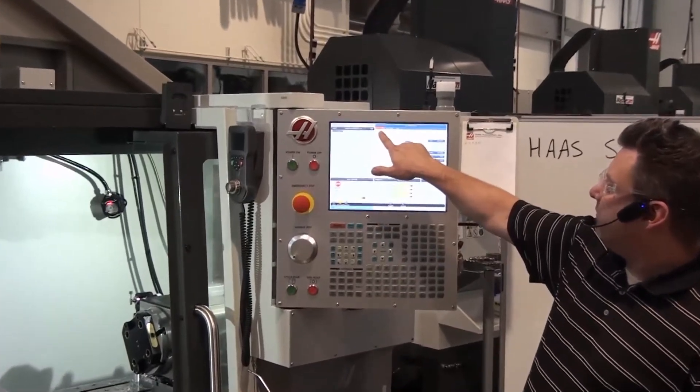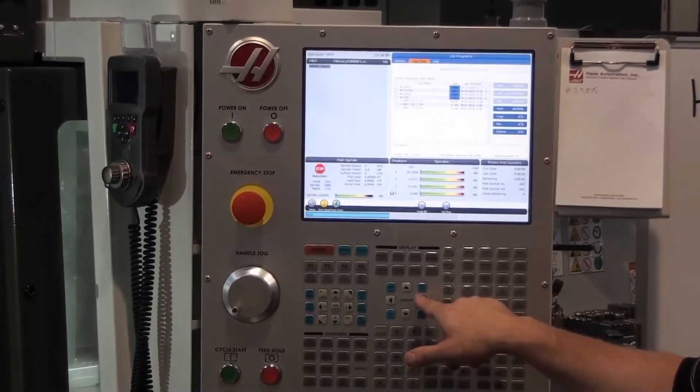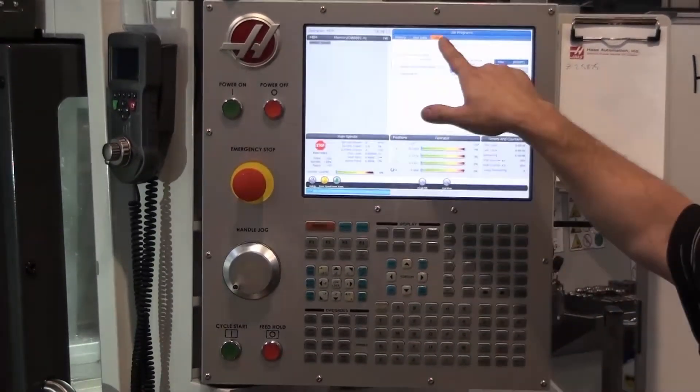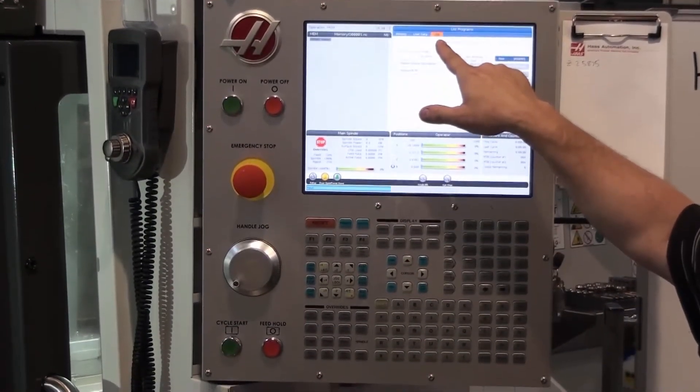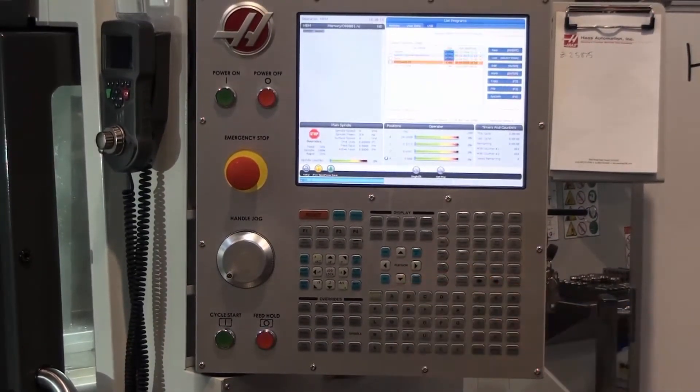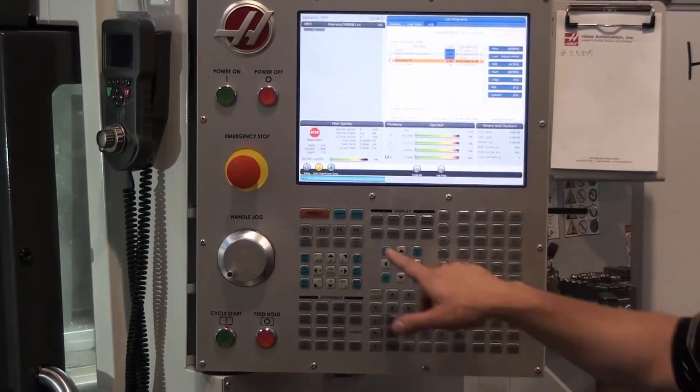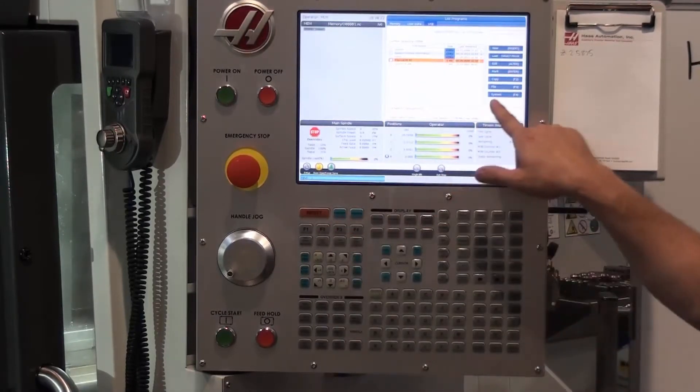Right now we have a choice between memory, user data, and USB. We want to arrow right until USB is selected and then arrow down until we find our program. Once we highlight our program, we can hit F2, which is copy.